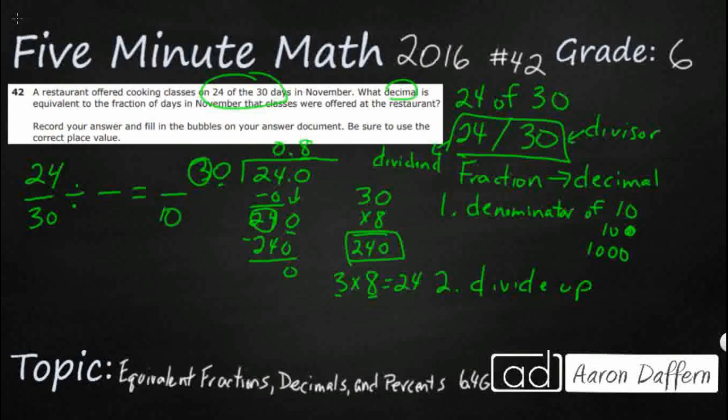So, when we're making an equivalent fraction like this, we are thinking 30. Since I'm going down, I'm going to divide 30 divided by what makes 10? And that's going to be 3.